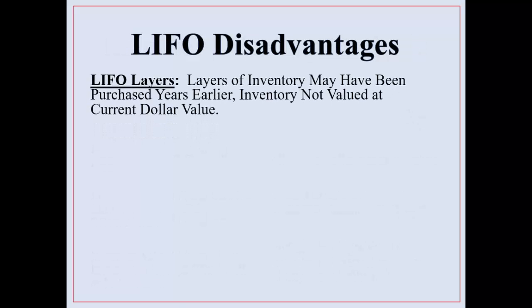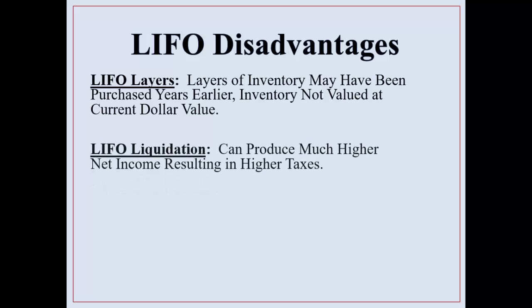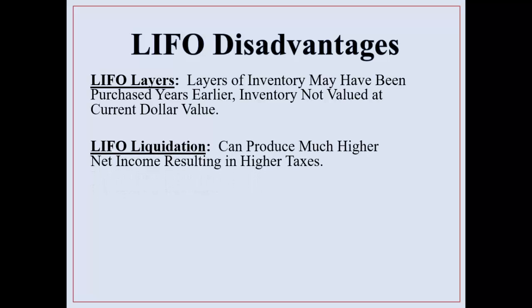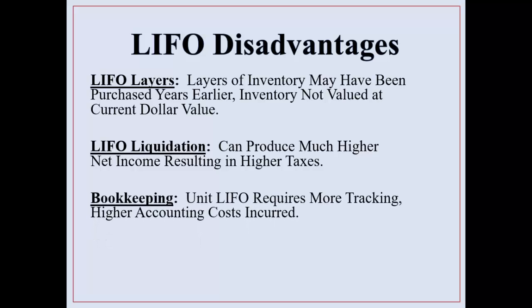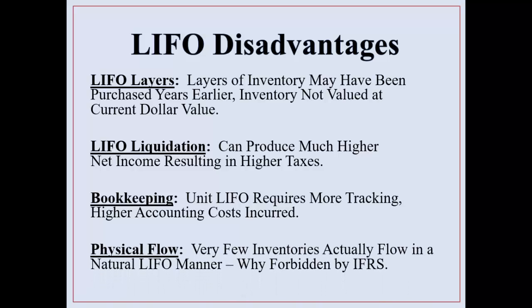LIFO has many disadvantages. There are LIFO layers — layers of inventory may have been purchased years earlier, and inventory is not valued at its current dollar value; it's more valued in units of original cost. LIFO liquidation can occur, producing much higher net income resulting in higher taxes than you had hoped for when you chose to use LIFO. Unit LIFO requires more tracking and higher accounting department costs. Also, very few inventories actually flow in a natural LIFO manner, which is really how the IFRS rules are written.